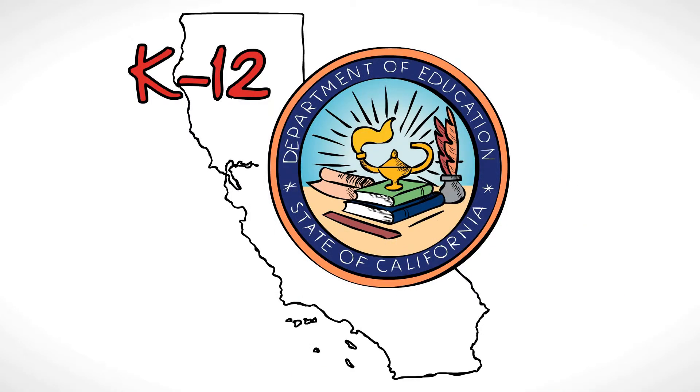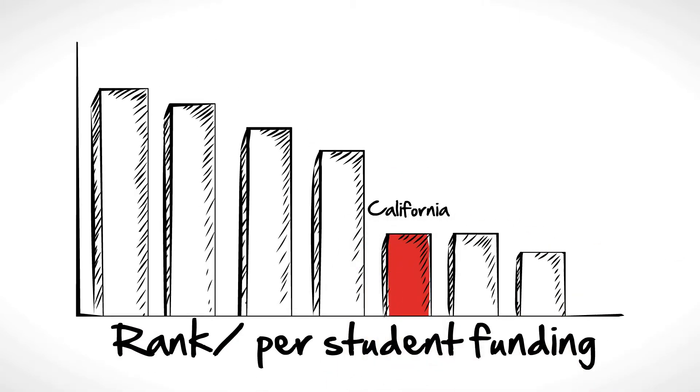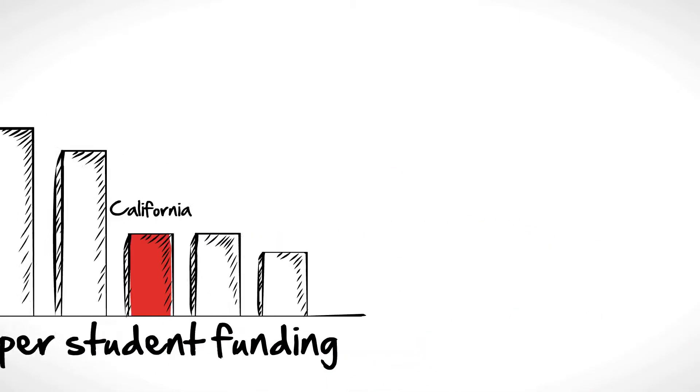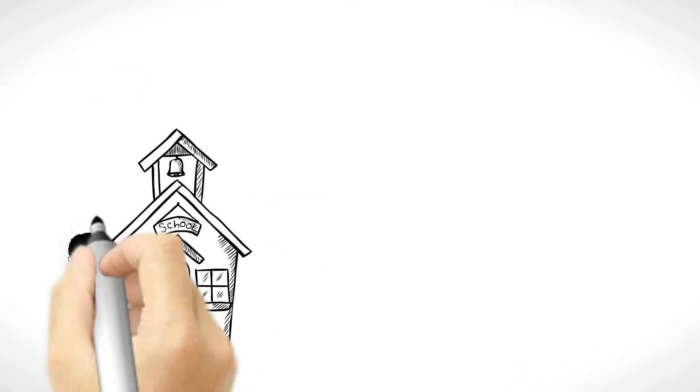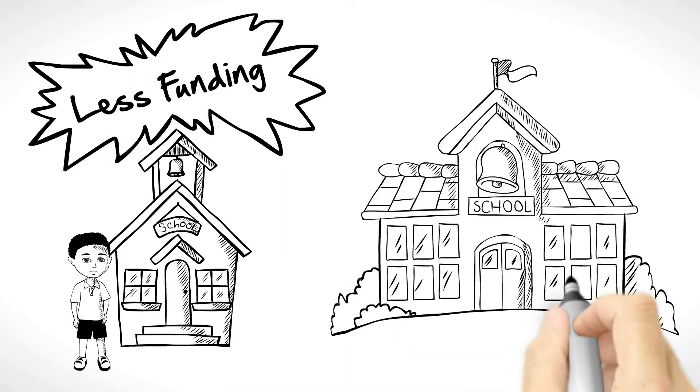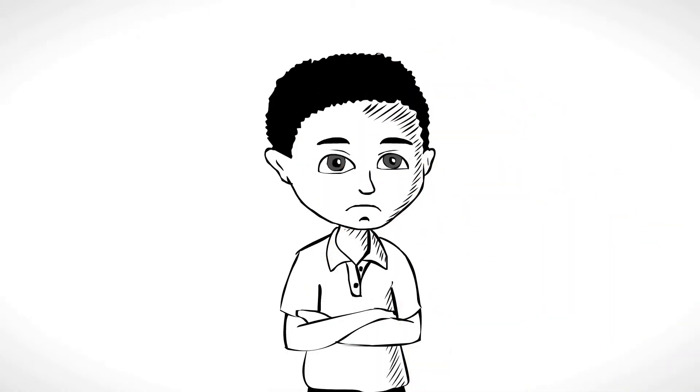K-12 education in California is in crisis. Not only does California rank near the bottom in per-student funding, and spending has been drastically cut, but students in low-income schools receive less funding than kids in well-to-do neighborhoods. This is not fair. This is not right. We can do better.